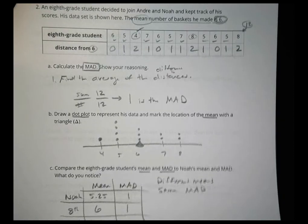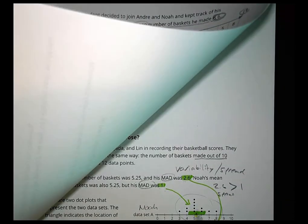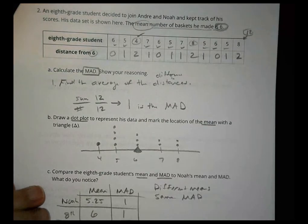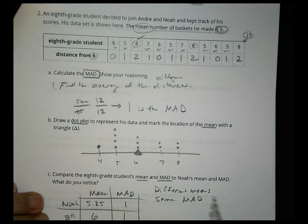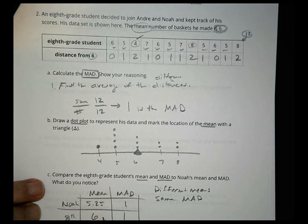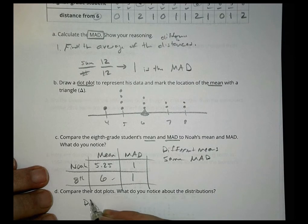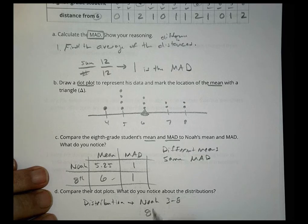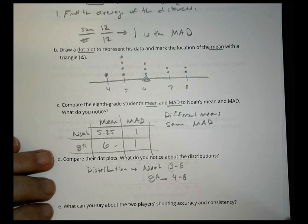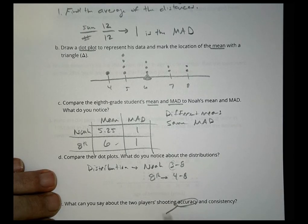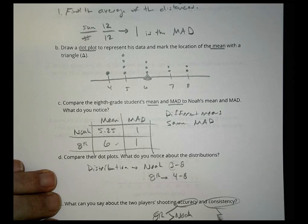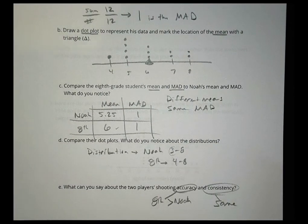When you compare the dot plots, they are very similar. Noah had a peak at 5 and this student also has a peak at 5, but there are more values higher up for the eighth grader — five, six, or seven values above 5 compared to four for Noah, which is why the average is a little higher. Noah's scores go from 3 to 8 and the eighth grader's go from 4 to 8, so he doesn't have any low scores compared to Noah. In terms of accuracy, the eighth grader is higher because the mean is higher; in terms of consistency, they are the same because they have the same mean absolute deviation.